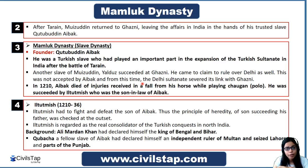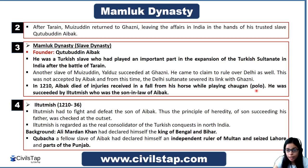In 1210, Qutubuddin Aibak died of injuries received after a fall from his horse while playing Chogan, which is called polo. He was succeeded by Iltutmish, who was the son-in-law of Aibak. Qutubuddin Aibak did not have a long ruling period, but the important events have been discussed.